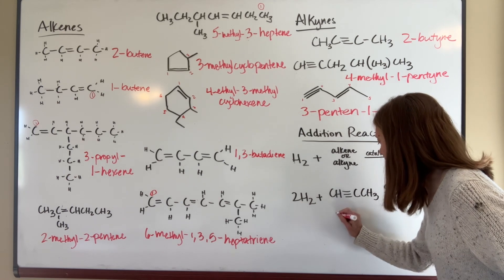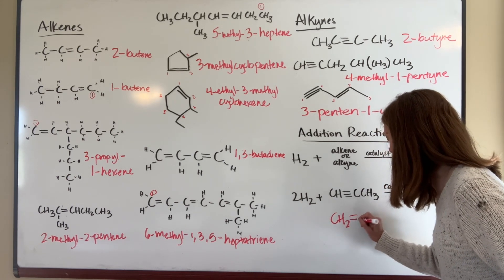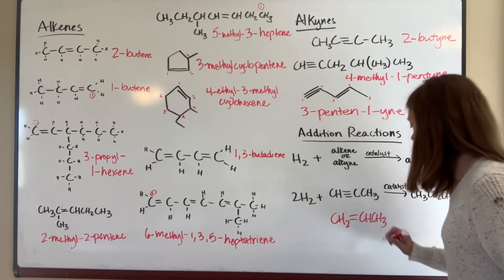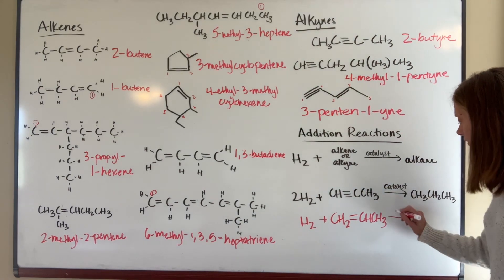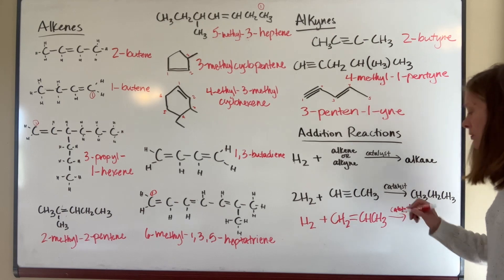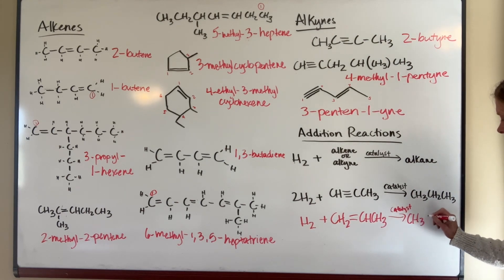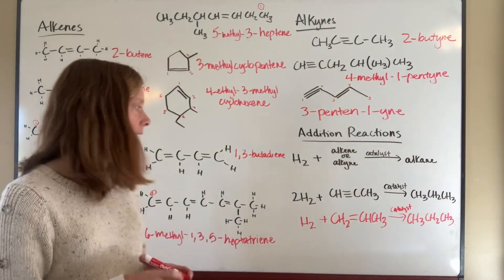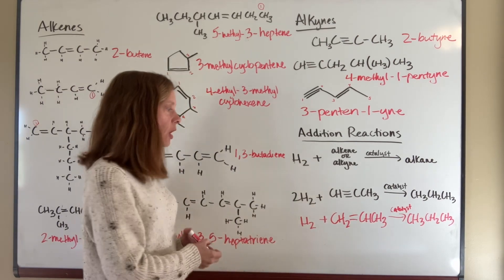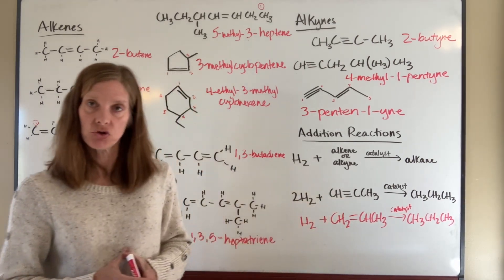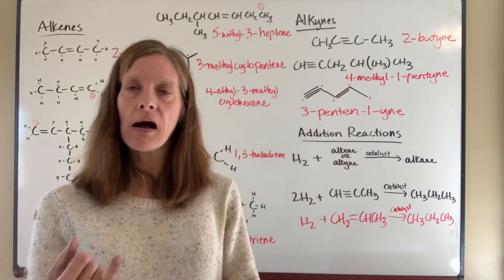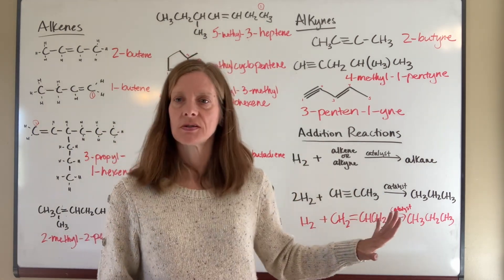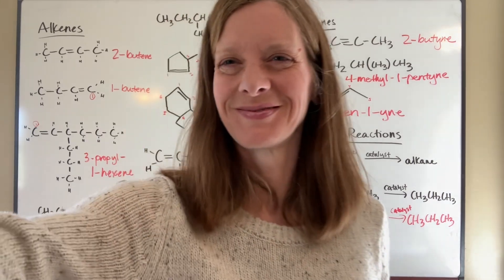Propyne requires two moles of hydrogen to become propane. If you start with propene (CH2=CH-CH3) and add hydrogen in the presence of a catalyst, you need only one mole of hydrogen to produce propane (CH3-CH2-CH3). With an alkyne you need two moles of hydrogen; with an alkene you need one mole — because you need to add more hydrogen to fully saturate it. So those are alkenes, alkynes, and addition reactions.